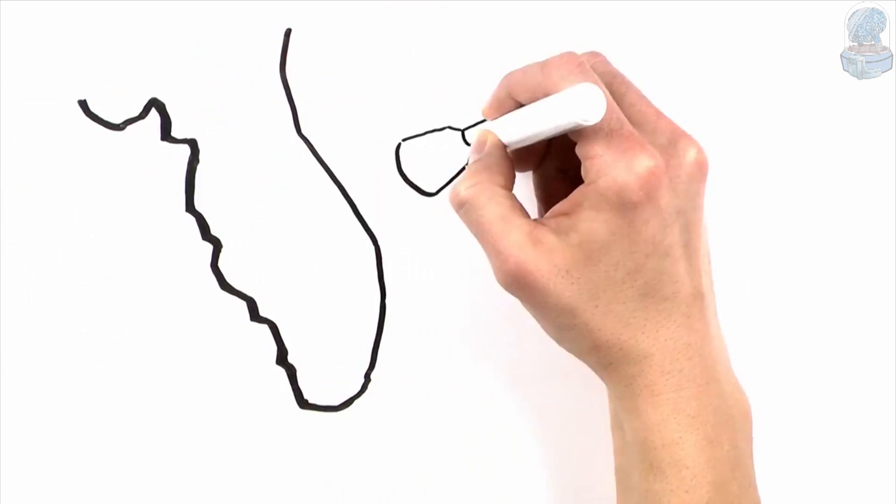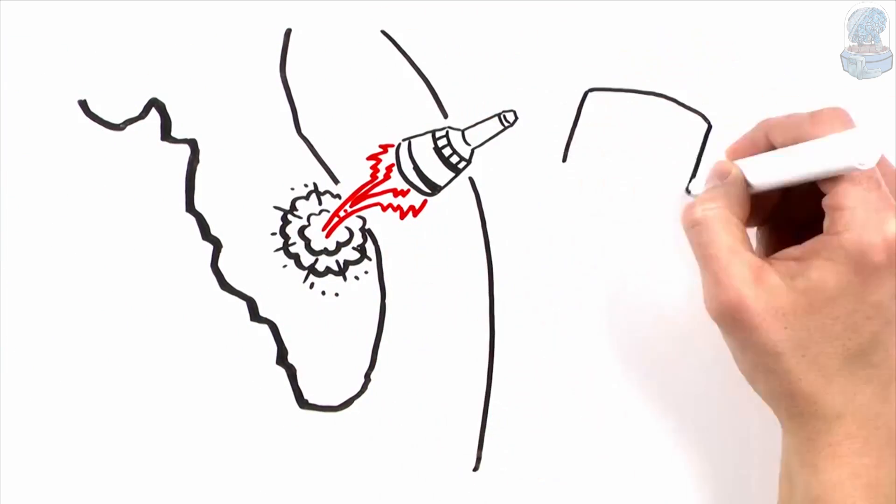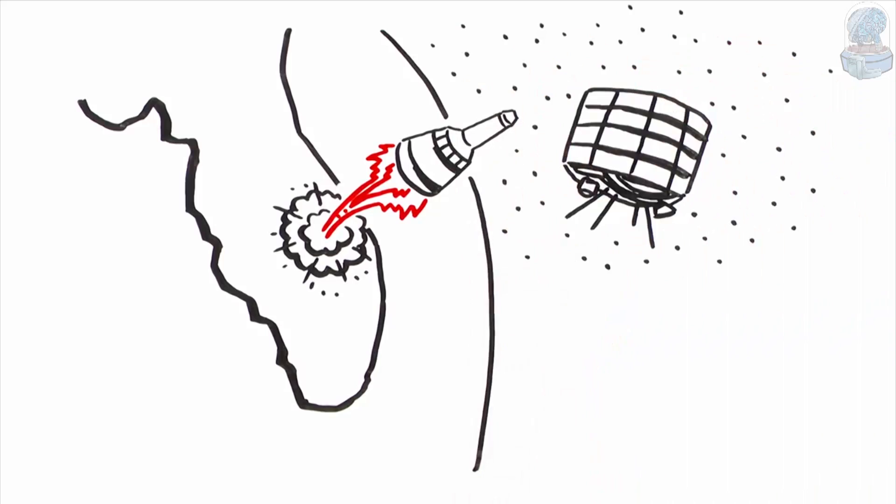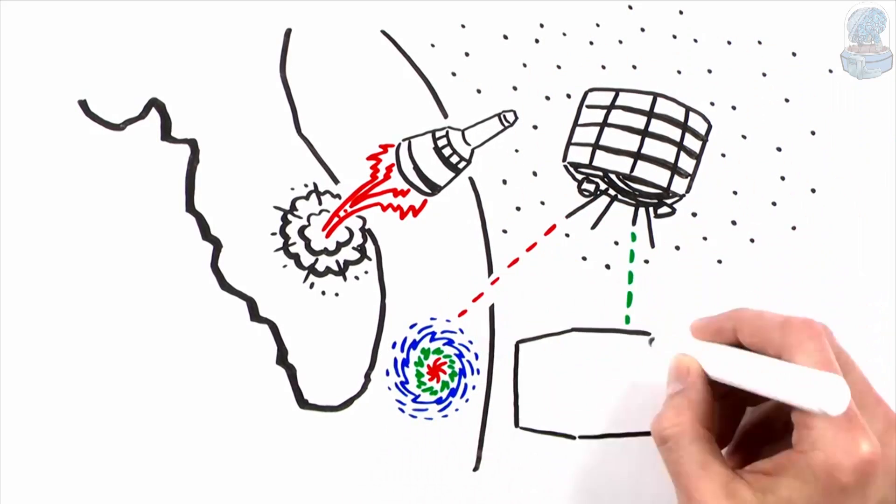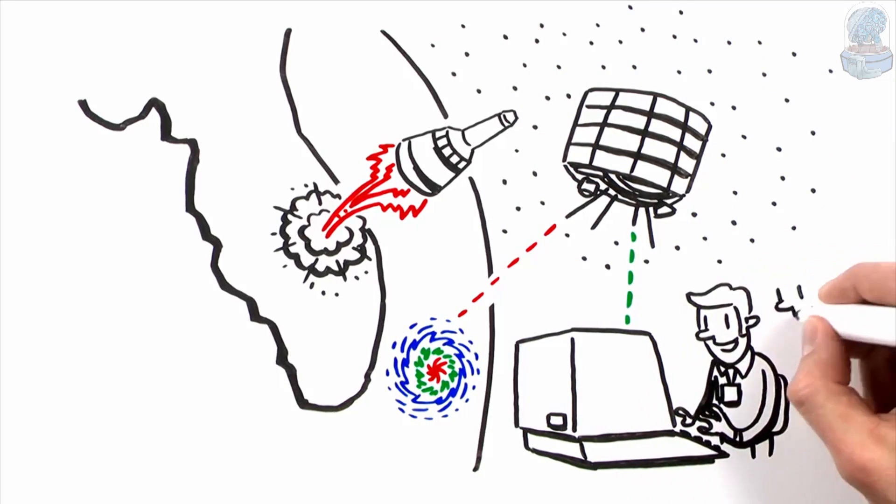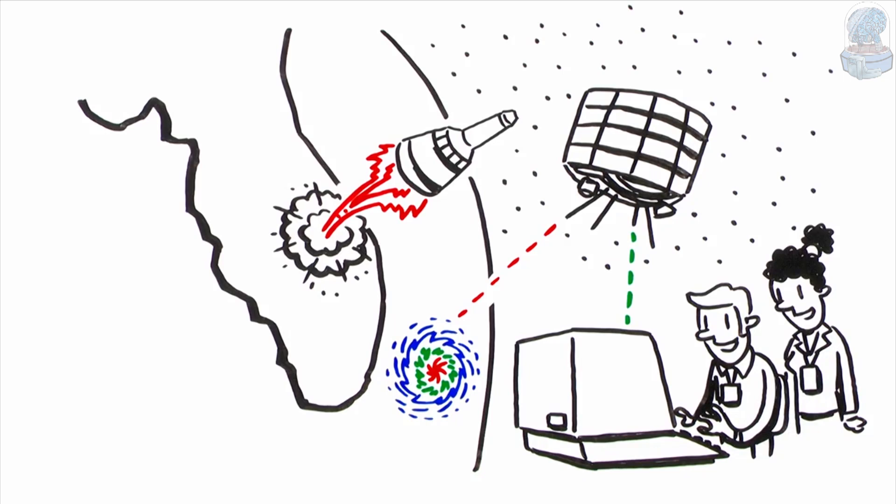Just three years after the space age began, NASA launched the first satellite to monitor Earth's weather. It was the beginning of a revolution in weather forecasting and laid the foundation for the global study of Earth.